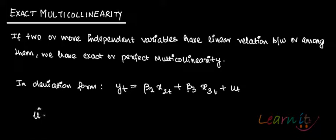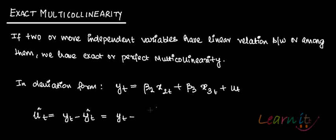And û_t is basically y_t minus ŷ_t. Remember that these are in the deviation form. ŷ_t is basically β̂_2 x_{2t} plus β̂_3 x_{3t}. So minus ŷ_t would give us minus β̂_2 x_{2t} minus β̂_3 x_{3t}.